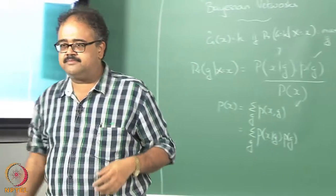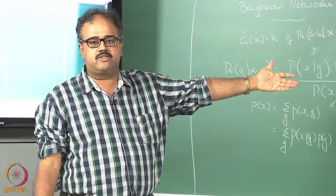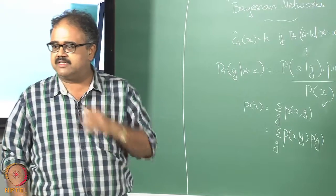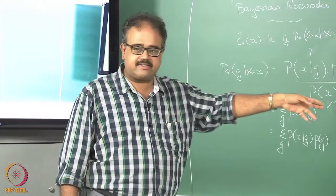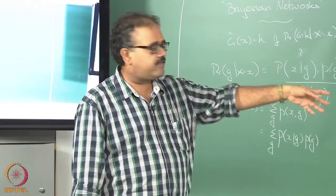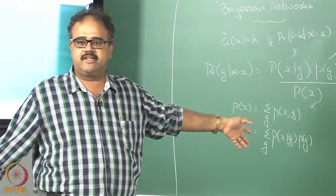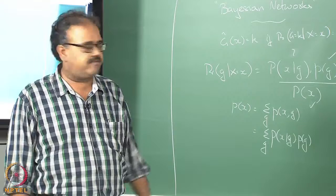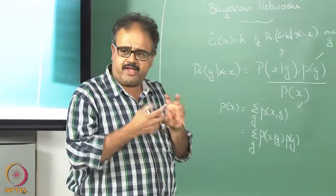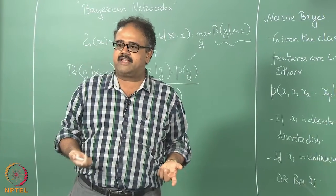My system might look like this: x1 is dependent only on x2 and x3. Given x2 and x3, x1 is independent of all the other variables. Likewise, given x6 and x7, x3 is independent of all the other variables. Given x5, x4 is independent of everything else, x5 is independent of everything else by itself, and x6 depends only on x7, which is independent of everything else. Whenever I say x6 is dependent on x7, I can always flip it around and say x7 is dependent on x6.